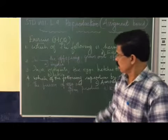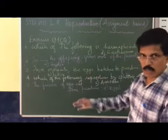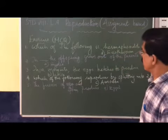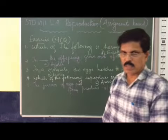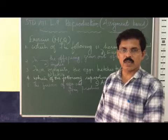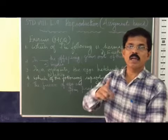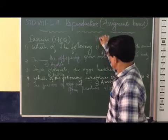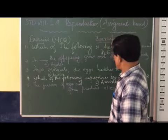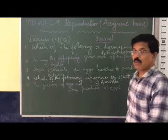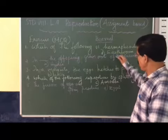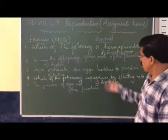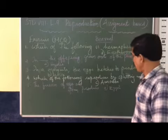Question one: Which of the following is hermaphrodite animal? The answer given is B. You know hermaphrodite? The animal which possesses both male and female sex organs in the same individual is called hermaphrodite. Can you tell me the other name of hermaphrodite? You can also say bisexual. Hermaphrodite or bisexual. Most of the plants are bisexual or hermaphrodite, but animals are very rarely. For example, earthworm, earthworm, you can say starfish, I mean jellyfish. Sexual hermaphrodite, it is bisexual or hermaphrodite.